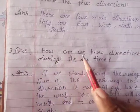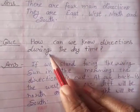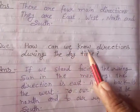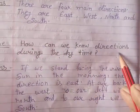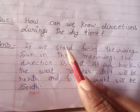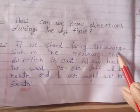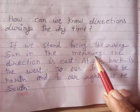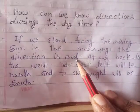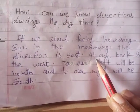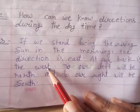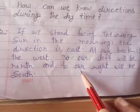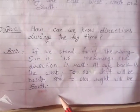Question number 3: How can we know direction during the daytime? Answer: If we stand facing the rising sun in the morning, the direction is east, our back is the west, to our left will be north and to our right will be south.